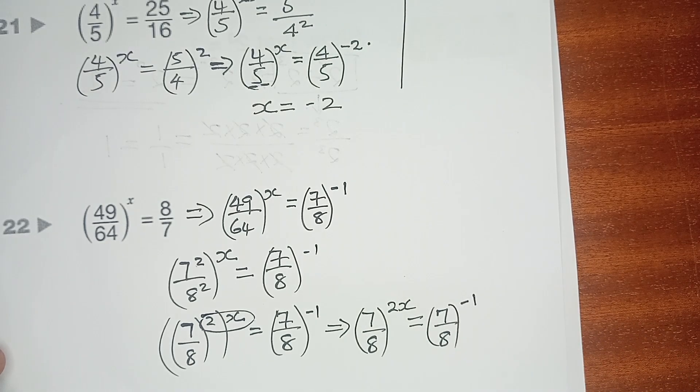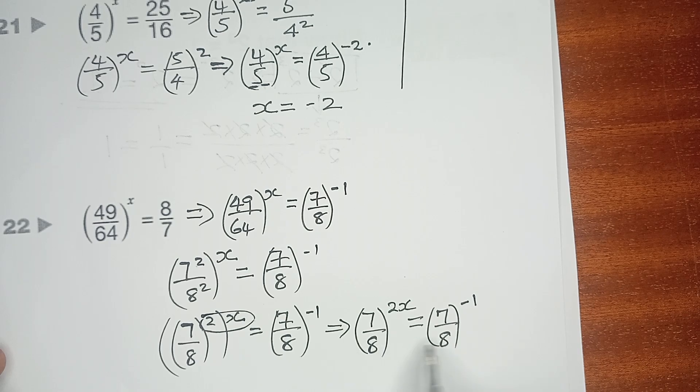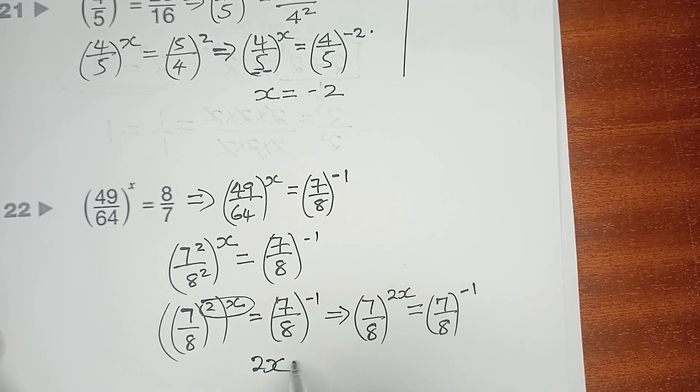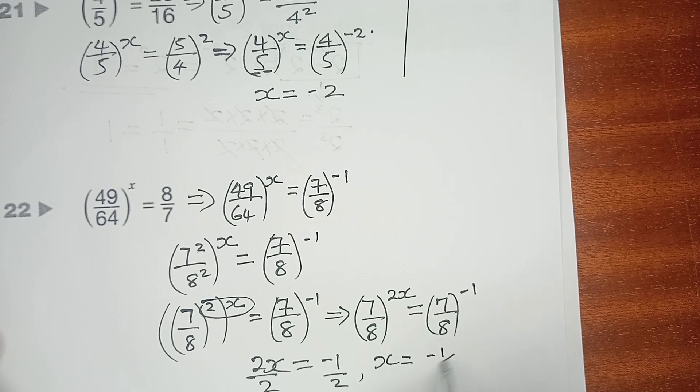Again, at this point, the left-hand side equals the right-hand side, and the bases are similar. It follows that even the indices must be similar and equal. So therefore, 2X equals -1. Dividing by 2, you will find that X equals -1/2.